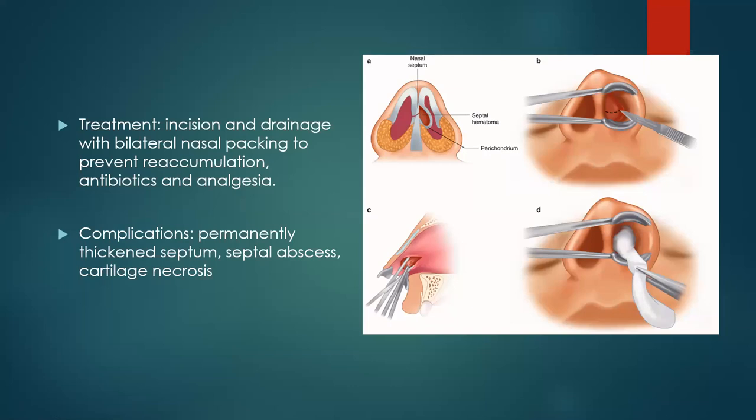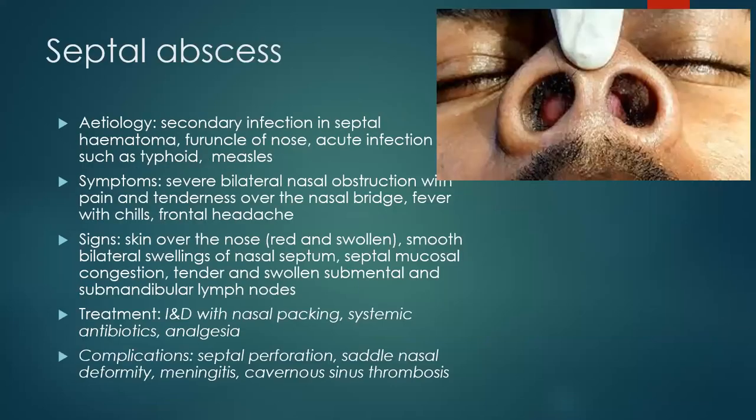Complications of septal hematoma include permanently thickened septum, progression to a septal abscess, or cartilaginous necrosis. If the septal hematoma progresses, it can give us what we call a septal abscess.